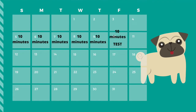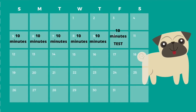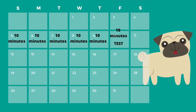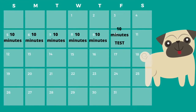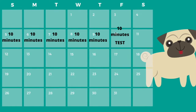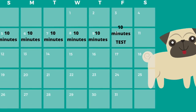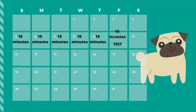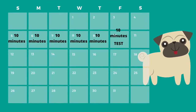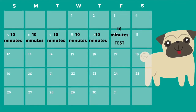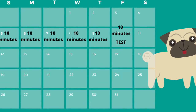Look at this calendar. Let's pretend I have a history test on Friday. On Sunday I study 10 minutes for my history test. On Monday, 10 minutes. On Tuesday, 10 minutes. On Wednesday, 10 minutes. On Thursday, 10 minutes. And on Friday morning, 10 more minutes. Look how much I studied — 60 minutes, a whole hour for that history test. That's called distributed practice because distributed means spread out over a lot of days or a lot of time.